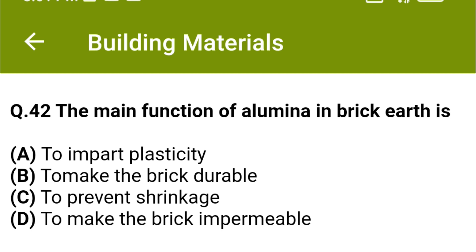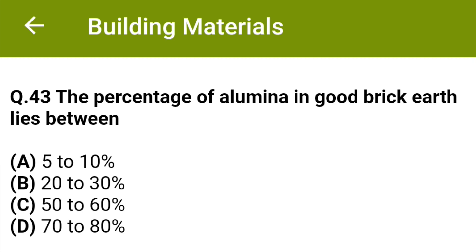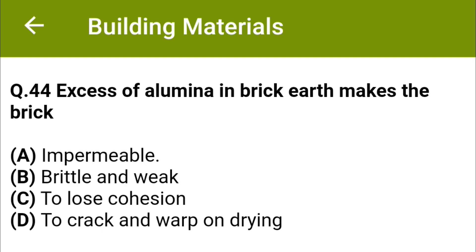The percentage of alumina in good brick earth lies between: option A 5 to 10%, option B 20 to 30%, option C 50 to 60%, option D 70 to 80%. The correct answer is option B: 20 to 30%. Excess of alumina in brick earth makes the brick: option A impermeable, option B brittle and weak, option C lose cohesion, option D crack and warp on drying. The correct answer is option D: to crack and warp on drying.